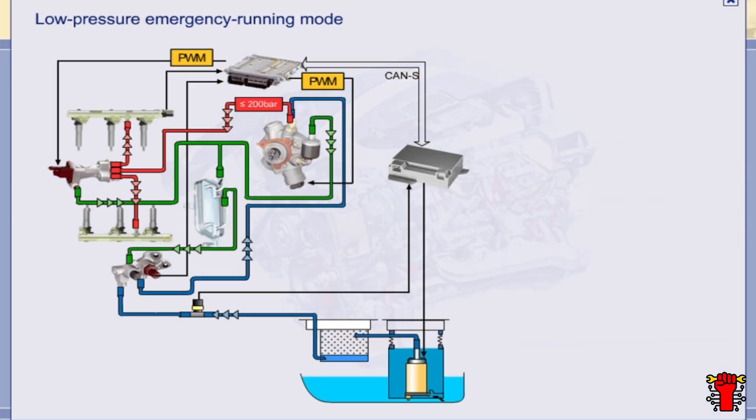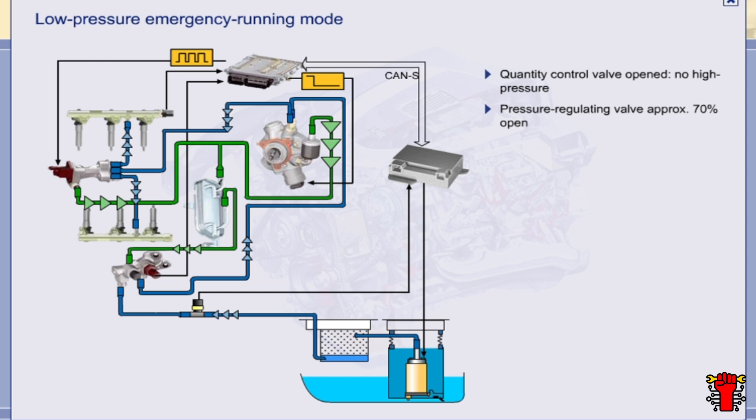If certain problems occur with the high pressure circuit, the system is switched to the low pressure emergency operating mode. The quantity control valve is open in this operating state. Because this means that the maximum amount of fuel is diverted, it is no longer possible to generate a high pressure. The pressure regulating valve is held open with a pulse duty factor of approximately 70%. This means that the rails are only supplied with fuel from the low pressure fuel pump. In other words, at a pressure of 5 to 5.5 bar.